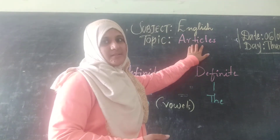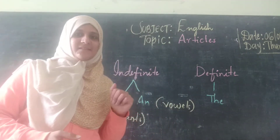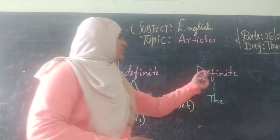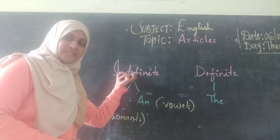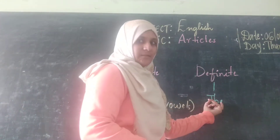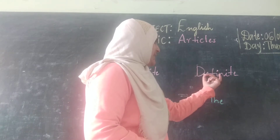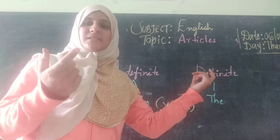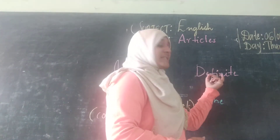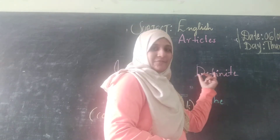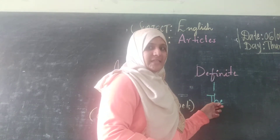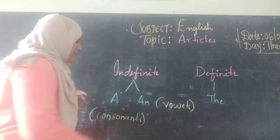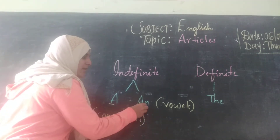As you know, there are 3 articles classified into 2 groups. One is the definite article, and the other is the indefinite article. The definite article is 'the' — the name itself suggests we are talking about a specific thing which we know, and the listener or reader knows about it as well. In the indefinite article group, there are 2 articles: 'a' and 'an'.